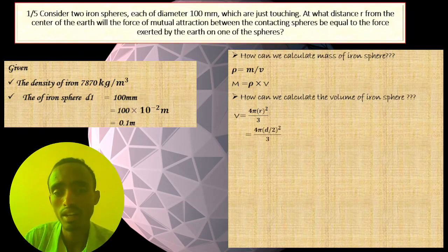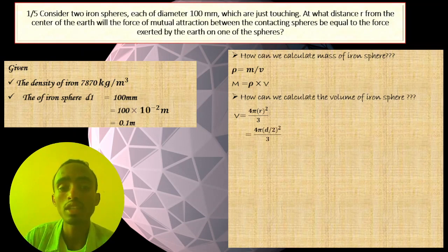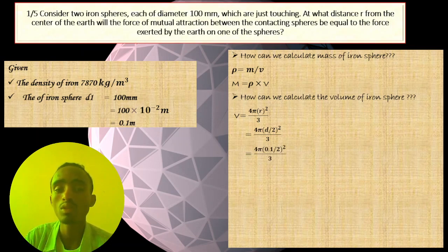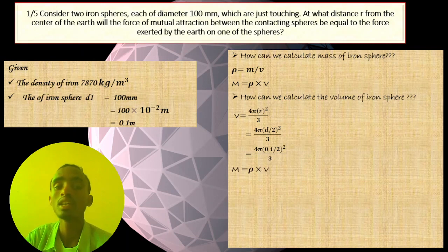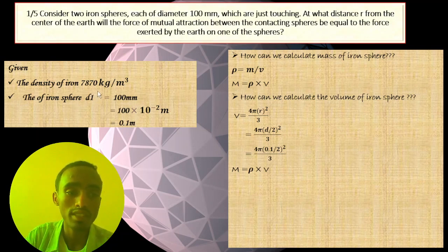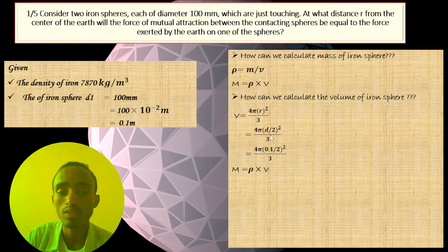We substitute the values into the volume formula. Since r equals d over 2, we have volume equals four pi times (d over 2) squared over three. Substituting the given value: four pi times (0.1 over 2) squared over three. We then calculate the mass of the iron sphere as mass equals density times volume, substituting the density of iron and the calculated volume.